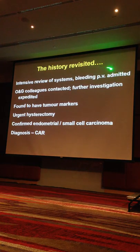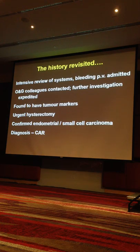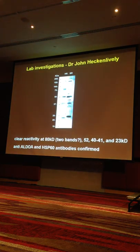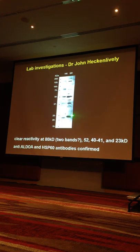The history was reviewed completely. The patient had vaginal bleeding — she was under Obs and Gynae, who told her not to worry. We told them to worry. They found cancer markers, did an urgent hysterectomy, and the patient had a small cell endometrial carcinoma — she has CAR. Western blots showed an anti-recoverin band of 23 kilodaltons, confirming CAR.